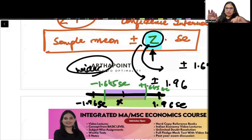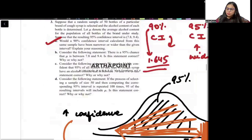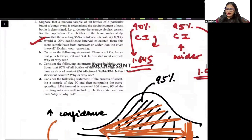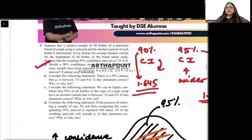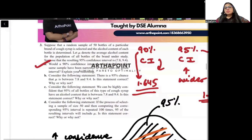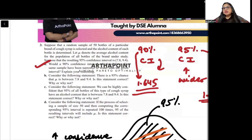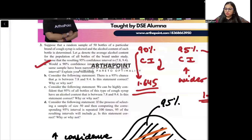Second part: suppose the statement 'there is a 95% chance that mu is between 7.8 and 9.4' — is this statement correct? This statement is not correct. We are not saying there is a 95% chance; we are saying that if we keep creating such confidence intervals, then out of many confidence intervals, 95% of the samples will contain the value of mu.